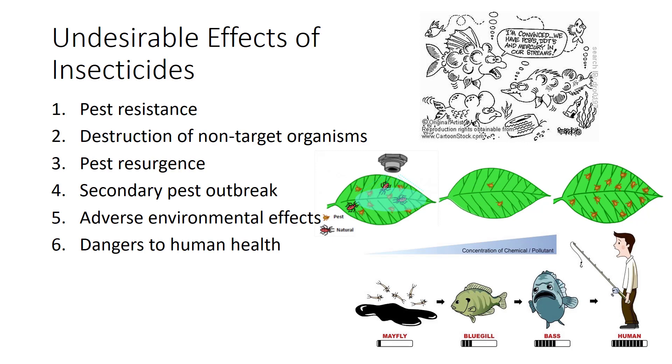Second, destruction of non-target organisms, including pollinators, the natural enemies of pests, and soil arthropods. Third, pest resurgence as a consequence of effects one and two.